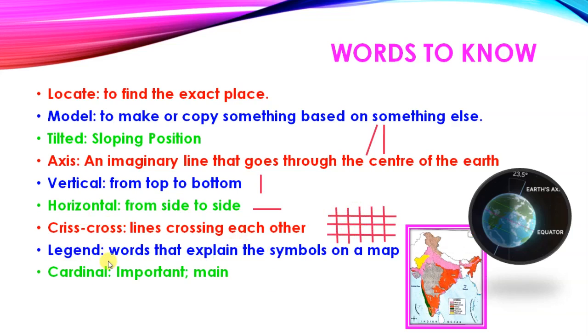Legends means words that explain the symbols on a map. These words give us information about the map. Colors are there that give us information. These are known as legends or keys. Cardinal means important or main.